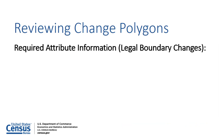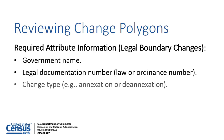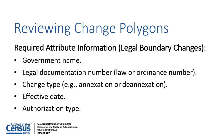Participants should ensure all change polygons include the required attribution. All legal boundary changes, such as annexations and de-annexations, require the name of the government with updates, a legal documentation number such as a law or ordinance number, the change type, an effective date for the change, and an authorization type.